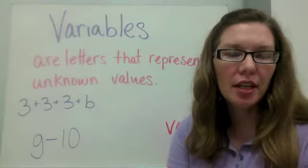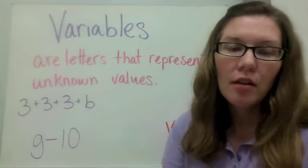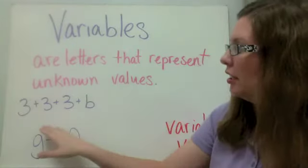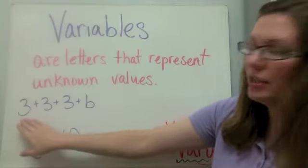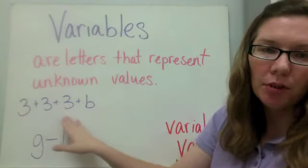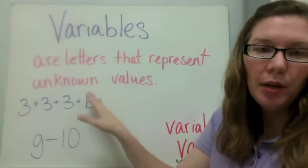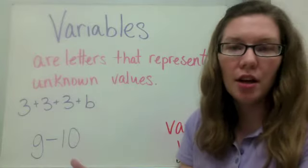Variables are letters that represent unknown values. For example, we have two expressions here. In this expression, we have 3 plus 3 plus 3 plus B. This B is a letter that represents an unknown value.